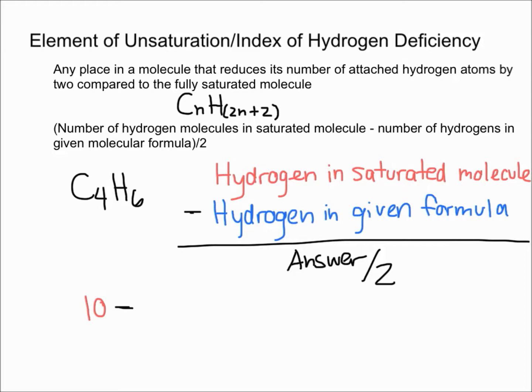Just doing the calculation, you have four, so you plug it into this, 2n+2, where 4 equals n. You get 2 times 4, which is 8, plus 2, which is 10. So there are 10 hydrogens in the saturated molecule.